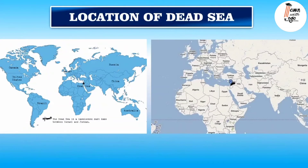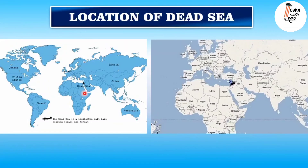Now let us try to find out the location of the Dead Sea. This is the world map — here is India, this is Pakistan, Afghanistan, this is Africa, this is Saudi Arabia, and here is the location of the Dead Sea. We can see on this map also: this is Egypt, Saudi Arabia, Iraq, Syria, and this is the Dead Sea.